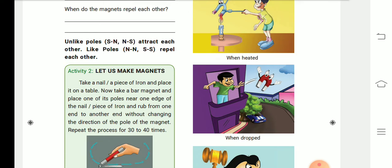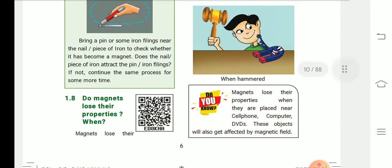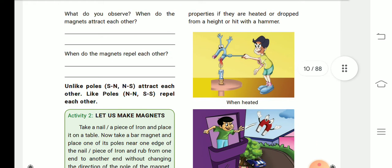Next. Do magnets lose their properties? Yes, the magnets also lose their properties. What are the properties? Magnets lose their properties if they are heated, or dropped from a height, or hit with a hammer. One is when heated. You hit the magnet, the magnet power will be lost.